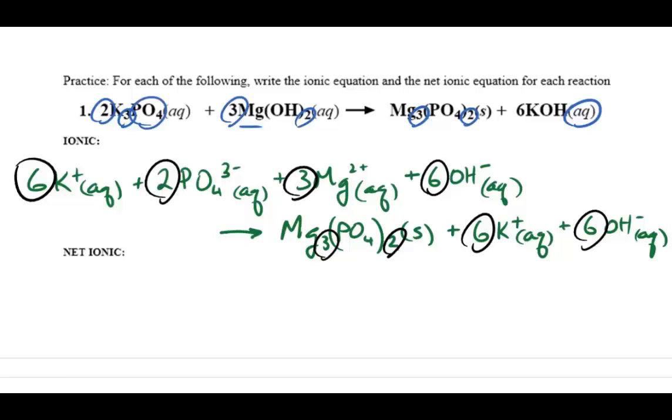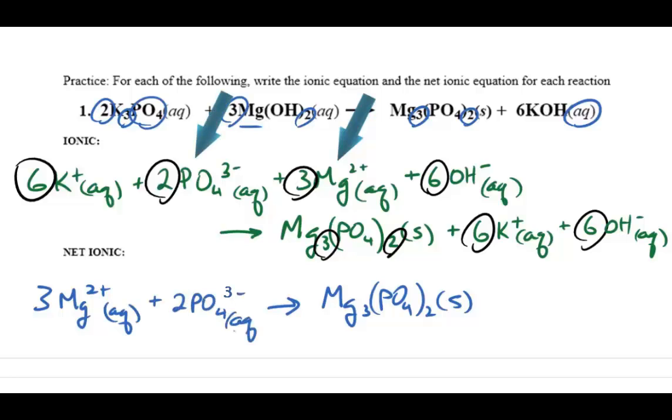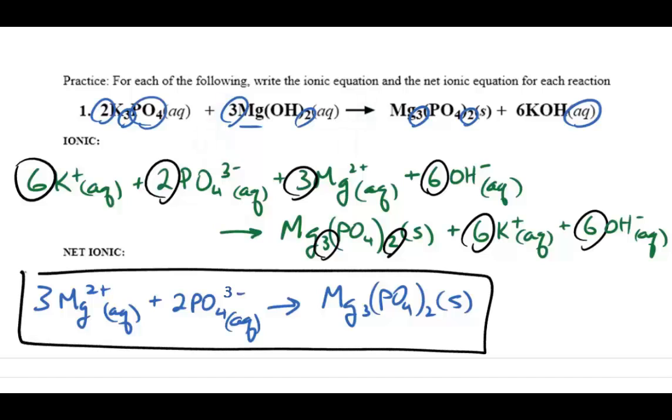If the ionic equation is not balanced, then you have done something incorrectly and should go back to evaluate what you did wrong. For the net equation, the change is the formation of solid magnesium phosphate, and that occurred from three magnesium ions reacting with two phosphate ions. So that is the net ionic equation.